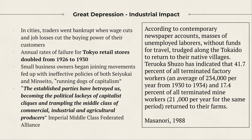The industrial impact was severe. Traders went bankrupt as wage cuts and job losses cut customers' buying power. Tokyo retail store failure rates doubled from 1926 to 1930. Small business owners joined movements fed up with the ineffective policies of both the Seiyukai and the Minseito parties, referring to them as the running dogs of capitalism, grouping them with the zaibatsu. The Imperial Middle Class Federated Alliance declared: 'The established parties have betrayed us, becoming the political lackeys of capitalist cliques, trampling the middle class of commercial industry and agricultural producers.'